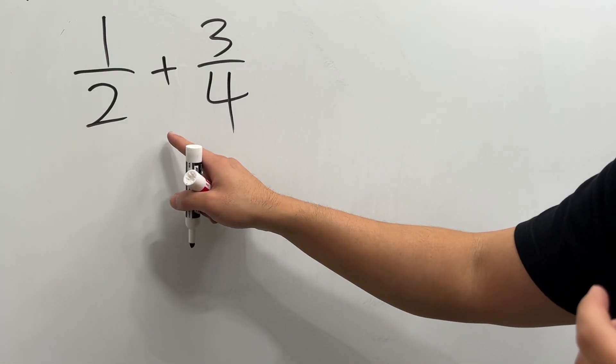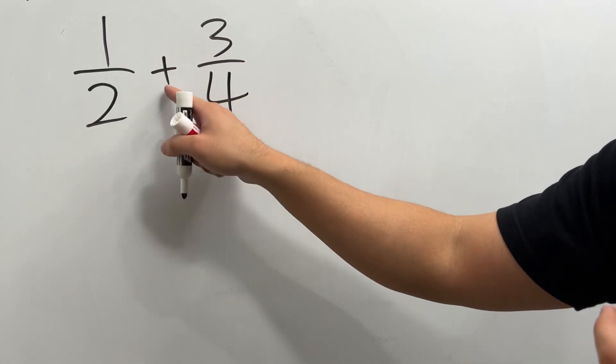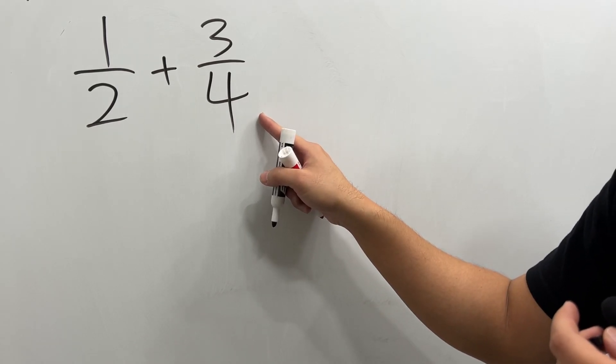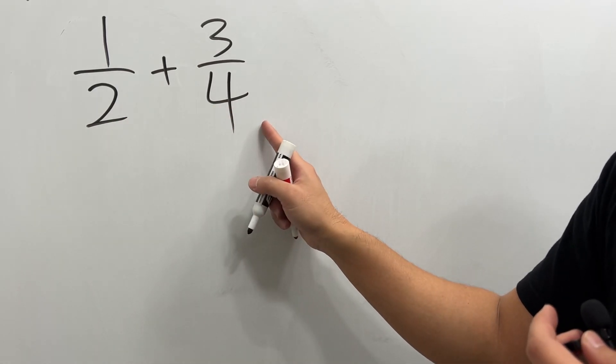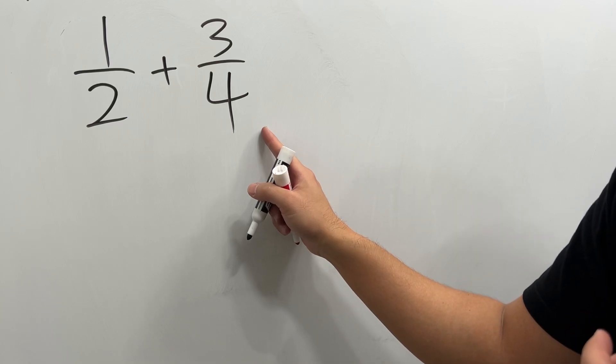This is how I teach adding fractions: 1 over 2 plus 3 over 4, for example. Notice that the denominators are different—that's no good—so go ahead and factor the denominators.